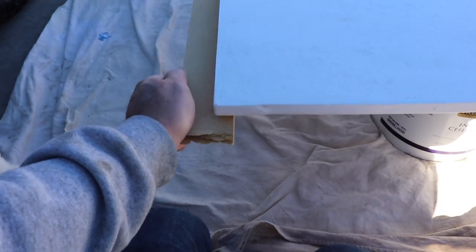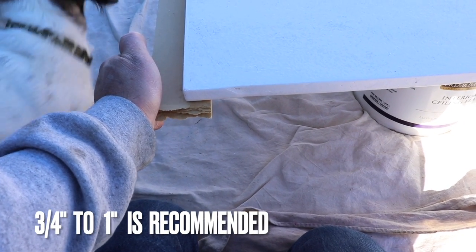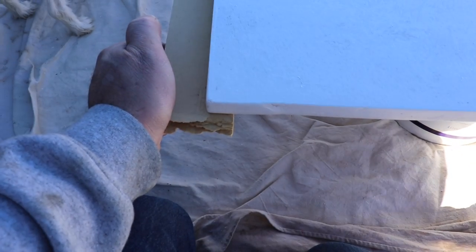So while this is drying, I'm going to start cutting my 45s for the frame that goes around. So I'm going to inset this about an inch. So that's how it's going to look all the way around. And then we're going to do our 45s.